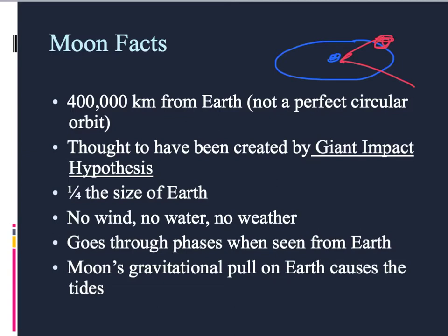It's about a quarter of the size of our Earth. There's no wind, no water, and no weather. And as seen from Earth, it goes through phases. And this is review. You guys remember tides, moon's gravitational pull on our Earth causes the tides.